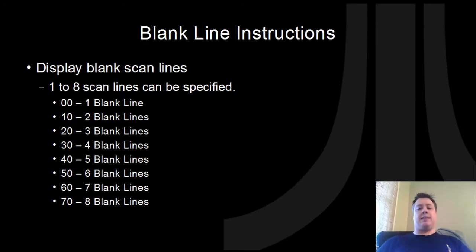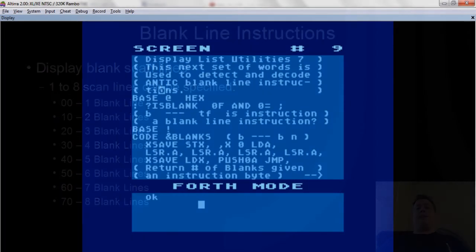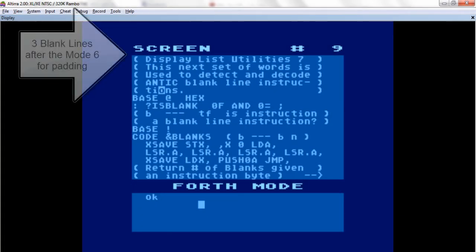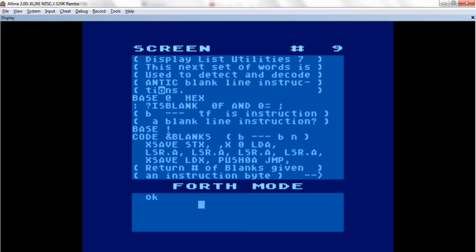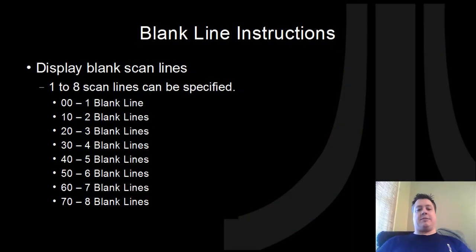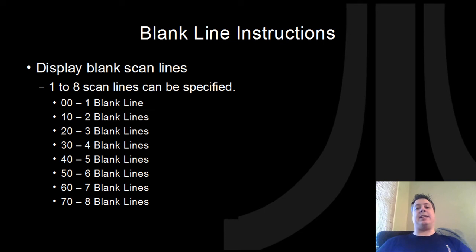Blank scan lines are basically just anything from one to eight blank scan lines, and they have specific instructions for them. As you can see, from 00 to 70, we're going to use this particular pattern to make a computation to quickly display whether or not this is one to eight scan lines, basically shifting everything over to the right as needed.